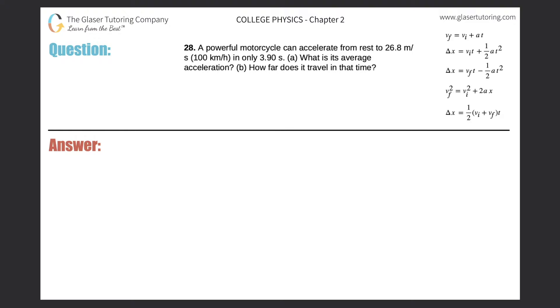Number 28. A powerful motorcycle can accelerate from rest to 26.8 meters per second in only 3.9 seconds. What is its average acceleration?